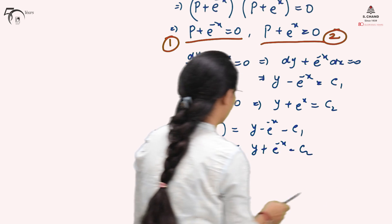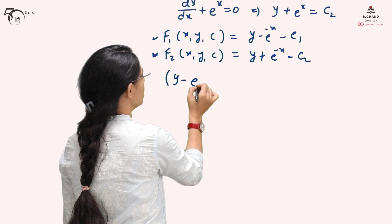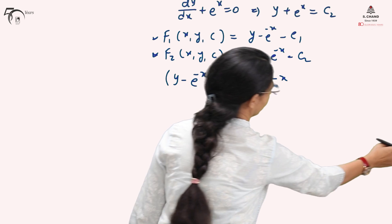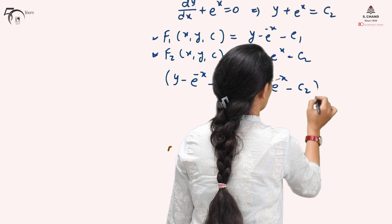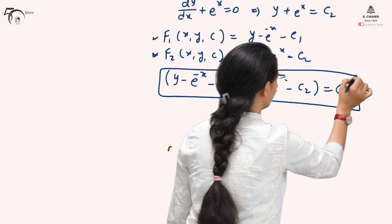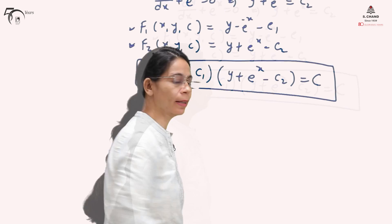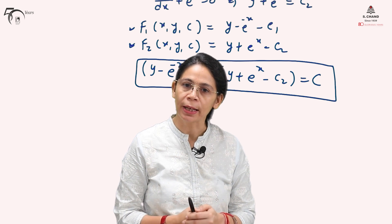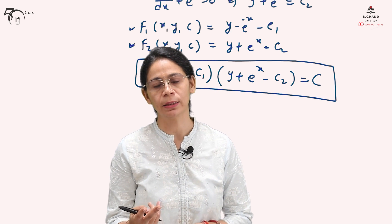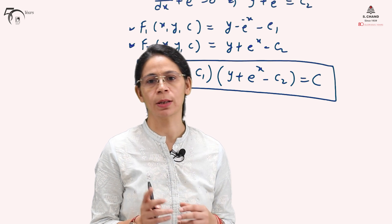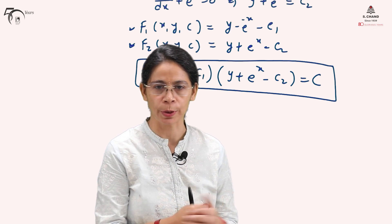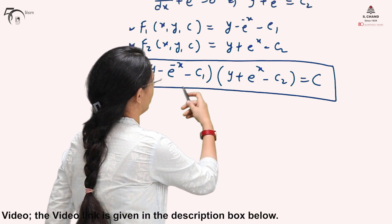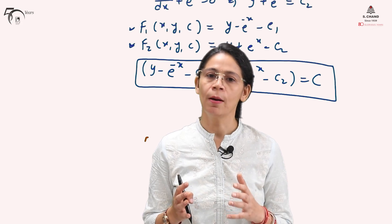The solution of the given differential equation can be written as (y − e^(-x) − c₁)·(y + e^x − c₂) = constant. Since the given equation was first order of second degree, we got two linear factors, each solved as a first order equation using variable separable form, and their solutions are multiplied together to give the solution for the first order but not first degree equation.